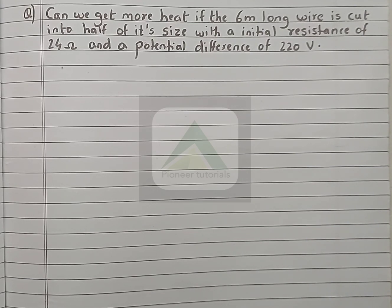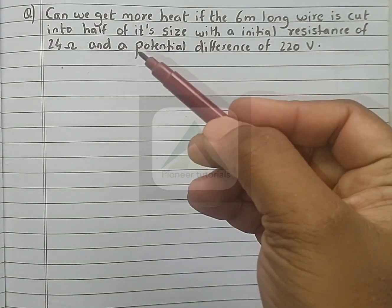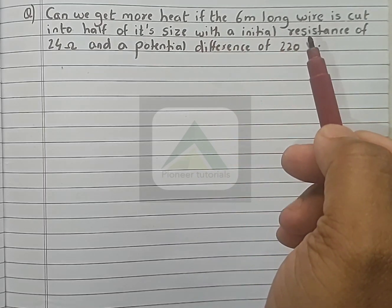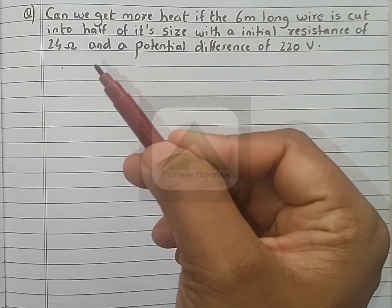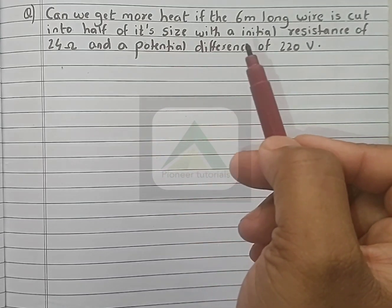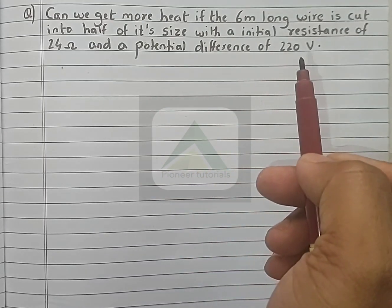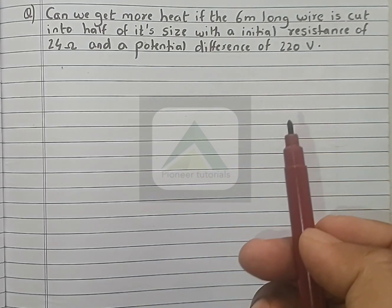So let's start with the numerical. Can we get more heat if the 6 meter long wire is cut into half of its size with an initial resistance of 24 ohms and a potential difference of 220 volts?